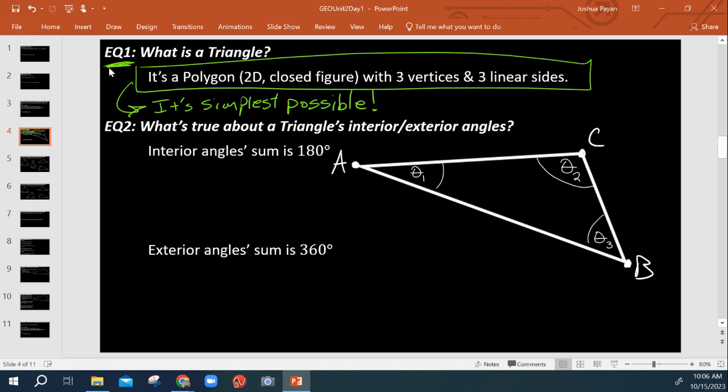It's the simplest one possible. You can't go down lower than three vertices and still have a polygon.